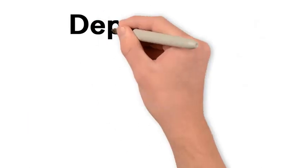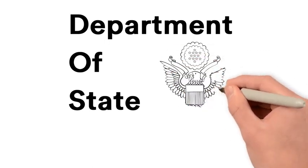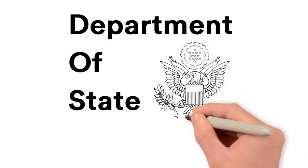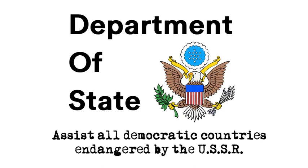A subsequent State Department report urged the federal government to resist vigorously Soviet efforts to expand into areas vital to American security. The report called on America to assist all democratic countries endangered by the USSR.